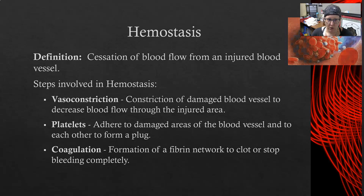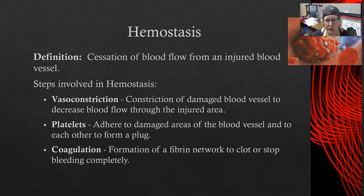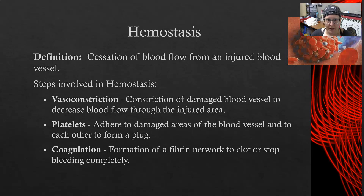The steps involved in hemostasis are: first, vasoconstriction — that's the constriction of the damaged blood vessel to decrease blood flow through the injured area and also prevents entry of materials. Then the platelets are activated and adhere or stick to the damaged area of the blood vessels and to each other, forming a platelet plug. Then there's a coagulation portion — the formation of a fibrin network to clot or stop the bleeding completely. With those three steps completed, the bleeding should stop at the injury site.